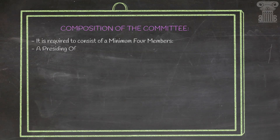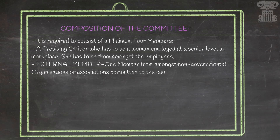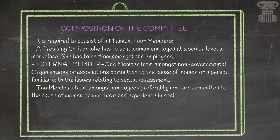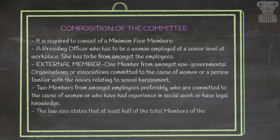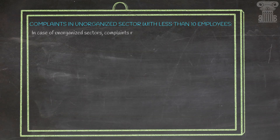Let me briefly talk about the composition of the Internal Complaints Committee. The presiding officer and chairperson of the ICC should be a senior-level female employee. The ICC should also include an external member who is familiar with issues related to sexual harassment — this person can be from an NGO or any association committed to the cause of women. Additionally, the ICC should include two or more members from among employees, with preference given to those with legal knowledge or experience in social work.